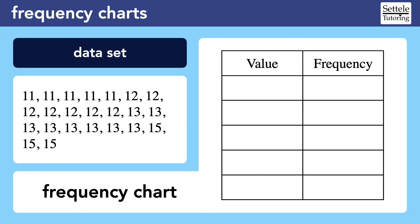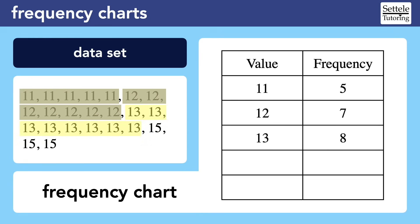A frequency chart has a column for the values in our set and a second column for the frequency of each value. Since our list is sequential, it's easy to fill in. The value 11 appears 5 times, so it has a frequency of 5. The number 12 has a frequency of 7, and the value 13 has a frequency of 8. There aren't any 14s, but we still include 14 with a frequency of 0 to avoid gaps. Finally, the number 15 has a frequency of 3.